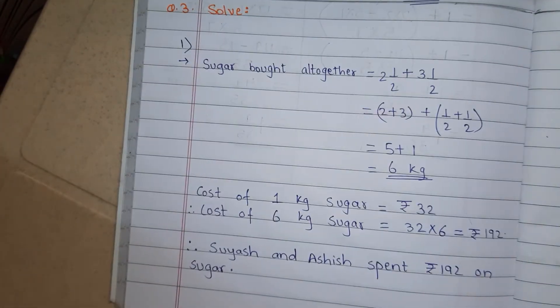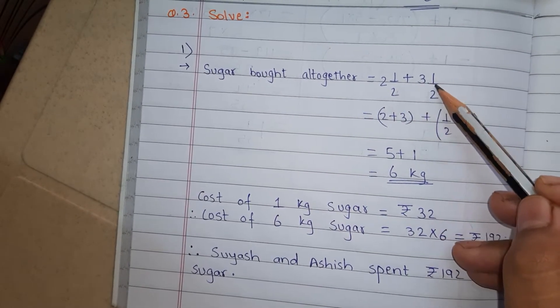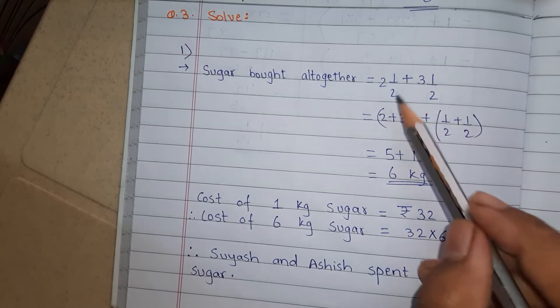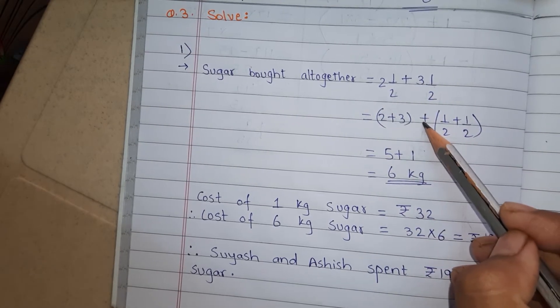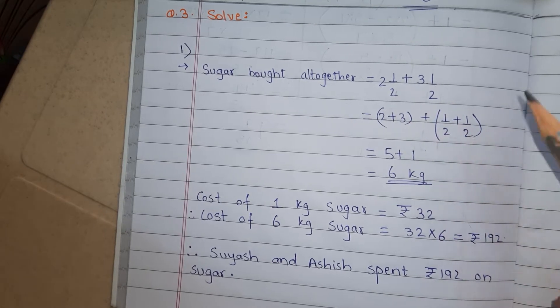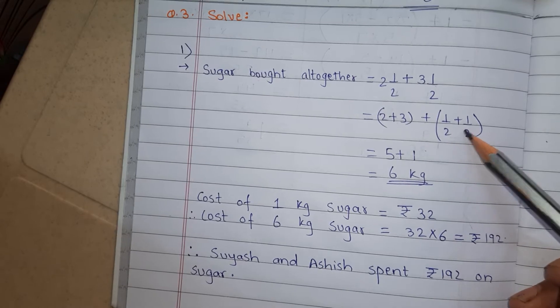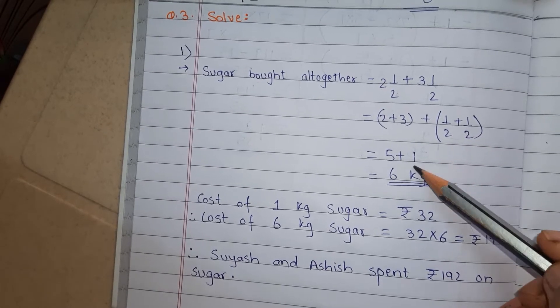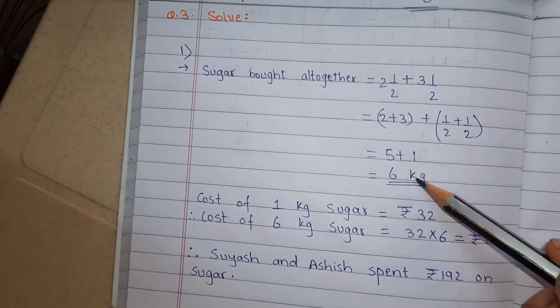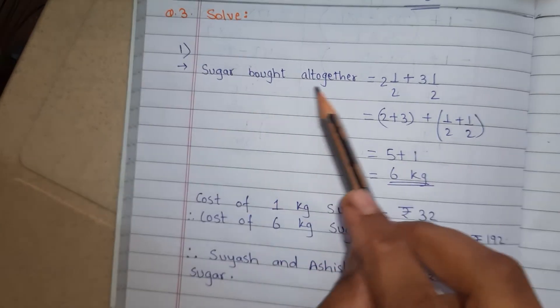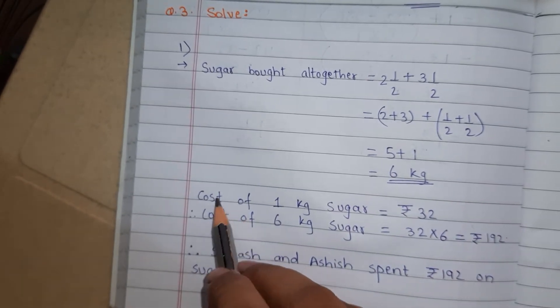So see here, sugar bought altogether 2½ plus 3½. Now method number 1, whole number plus whole number and fraction plus fraction. So 2 plus 3 is 5 and half plus half is 1, okay half and half will be 1. So 5 plus 1 is 6. So together they bought 6 kg of sugar. Now one more thing is given.